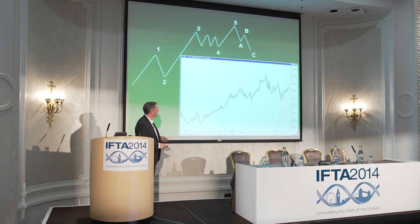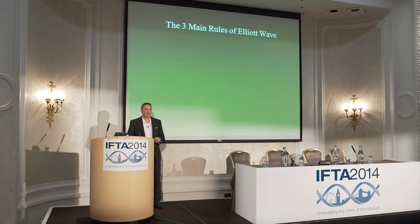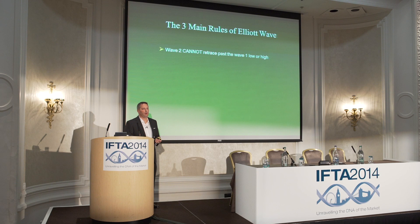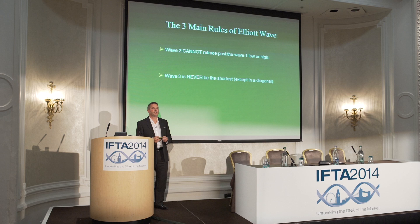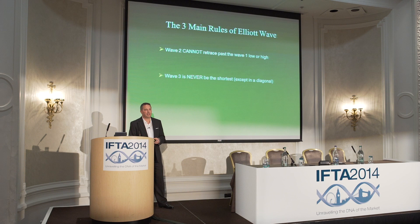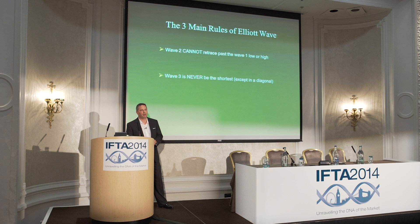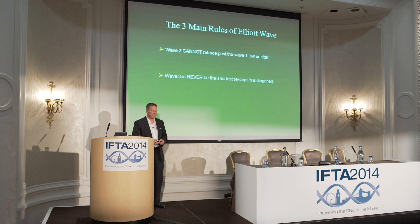The main rules of Elliott Wave — you just cannot break these. Wave 2 cannot retrace back through the Wave 1 low in a bull market, or Wave 1 high in a bear market. Wave 3 is never the shortest — there's only one pattern when it is, and that's in a diagonal. There are far more diagonal firsts cropping up, especially in foreign exchange. Generally you'll see them in a fifth wave process — what conventional technicians know as a wedge top — and it generally goes with divergence in the RSI. Wave 4, once you're retracing Wave 3, never crosses back through the top of Wave 1.